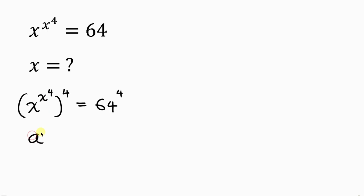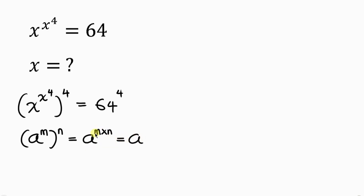On the left-hand side I'm going to apply the law of indices, which says: when I have A raised to the power of M, and this is also raised to the power of N, take the base A and multiply the powers — M times N — giving A to the power of MN.